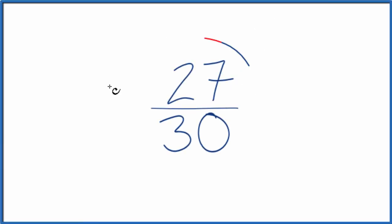Let's simplify the fraction 27 thirtieths. What we want to do is find another fraction that's equivalent. It's equal to 27 divided by 30, has the same value. It's just that the numerator and denominator, they're different.